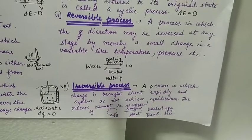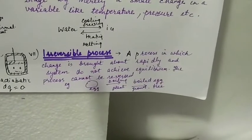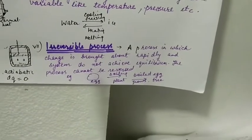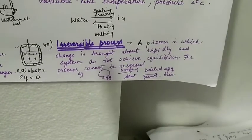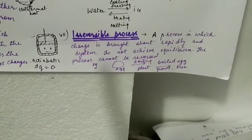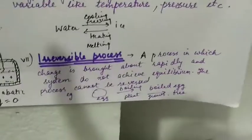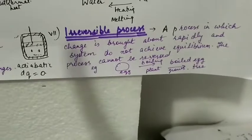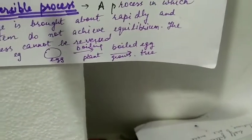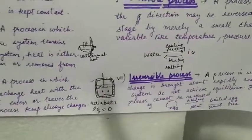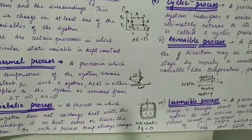Irreversible process: the change is done so fast that the system cannot establish equilibrium and we cannot reverse that system. So this type of process is called irreversible process. Like if you boil an egg once, it cannot become an unboiled egg again - it is an irreversible change. Similarly, if a plant grows and changes into a tree, you cannot change the tree back into a plant - it is also an irreversible process. Thank you, have a nice day.